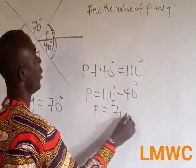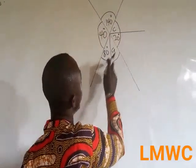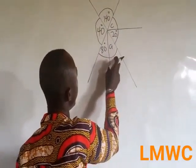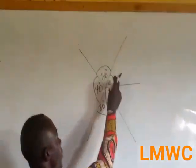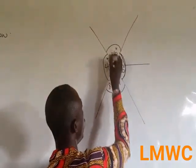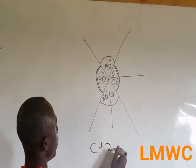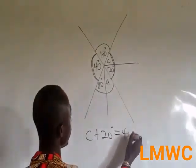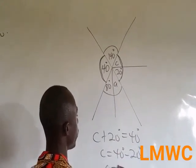Last question. So we have here 80 and here too is 140. Here is 20 degrees, C, and 40 degrees. This is vertically opposite to this angle, so it becomes C plus 20 is equal to 40. C is equal to 40 minus 20. C is equal to 20.